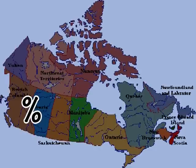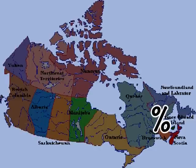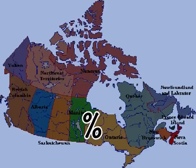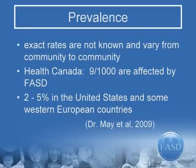Exact rates of FASD are not known and vary from community to community. Health Canada estimates that 9 out of 1,000 are affected by FASD. In a 2009 study, Dr. Philip May and colleagues state the prevalence of FASD in populations of younger school children may be as high as 2 to 5% in the United States and some Western European countries.